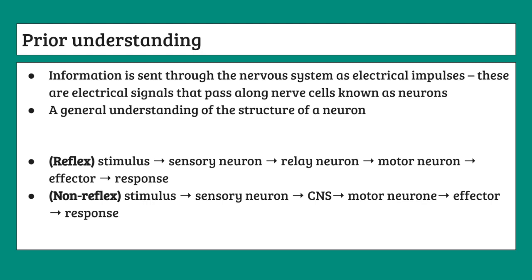Another thing you need to know is a general understanding of the structure of a neuron. While this is much less important than the other prerequisites, it is something you will end up needing to know for the rest of your GCSE syllabus. So I still recommend that before you watch this video, just have a brief look at the structure of a neuron, as there are a few points you'll only understand if you know how a neuron cell looks and what its different parts' functions are.